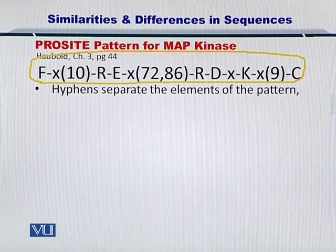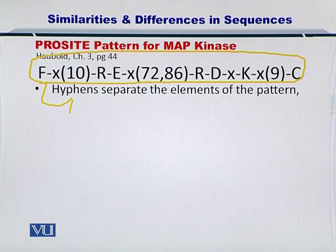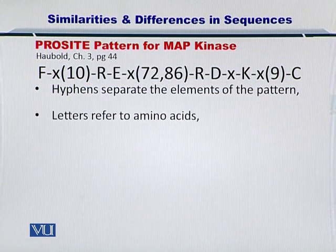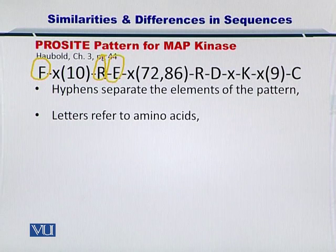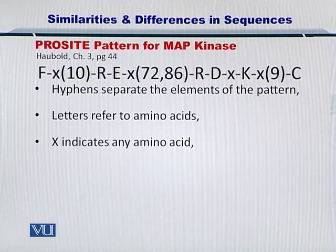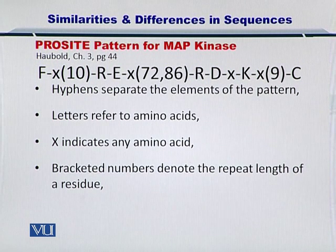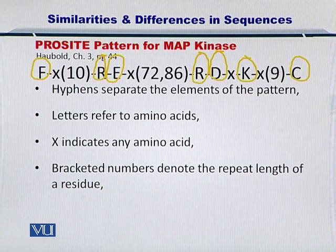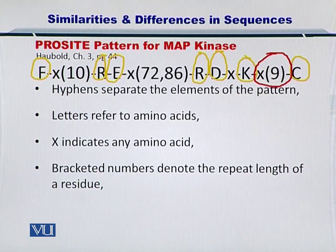The hyphens in the ProSite pattern separate the elements of the pattern — essentially separating amino acids from each other. The letters refer to the amino acids, for example R, D, K, and C. X indicates any amino acid from the 20 different amino acids, and the bracketed numbers denote the repeat length. As you can see here, this X can be repeated nine times, meaning any amino acid occurring nine times.